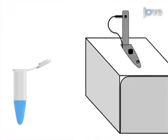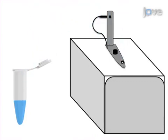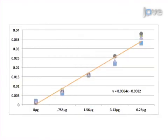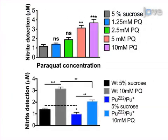Next, measure the absorbance of the colored reaction product and quantify the values against a standard curve for nitrite concentration. Ultimately, this colorimetric assay is used to show the endogenous catalytic activity of nitric oxide synthase.